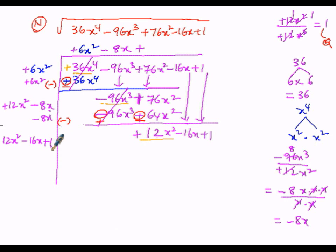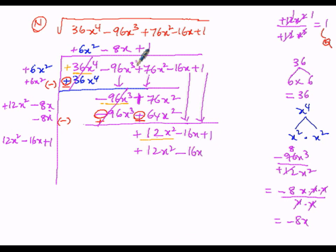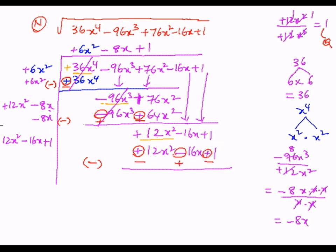The third term of the quotient is plus 1. We multiply the entire new divisor by this last quotient term: plus 1 into 12x squared is 12x squared; plus 1 into minus 16x is minus 16x; plus 1 into plus 1 is plus 1. Now we subtract: change the signs — plus becomes minus, minus becomes plus. So 12x squared minus 12x squared cancels, minus 16x plus 16x cancels, and plus 1 minus 1 equals 0.